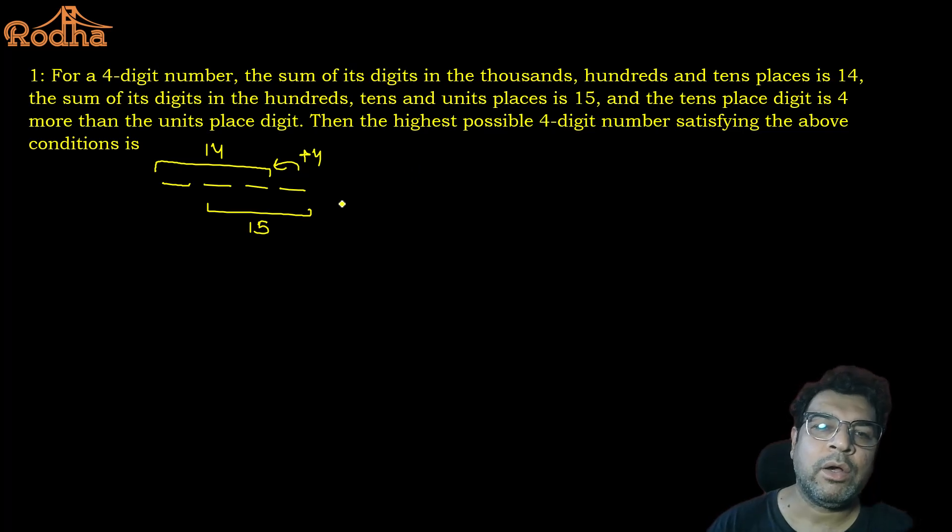What is the smart trick in this particular question? Putting the options, putting the values rather than options. We have four numbers. I can start with the units place. What are the possibilities for units place? Suppose units place is 1, so this is plus 4, that is 5. Sum of these three should be 15, so this should be 9. Sum of these three should be 14, so this will be 0. Not possible, it's a 4-digit number. If this is 2, this will be 6. One is increased here, one is increased here, so two decrease here because sum is constant, so it will become 7. One increase here, two decrease here, so one increase here, it will be 1.